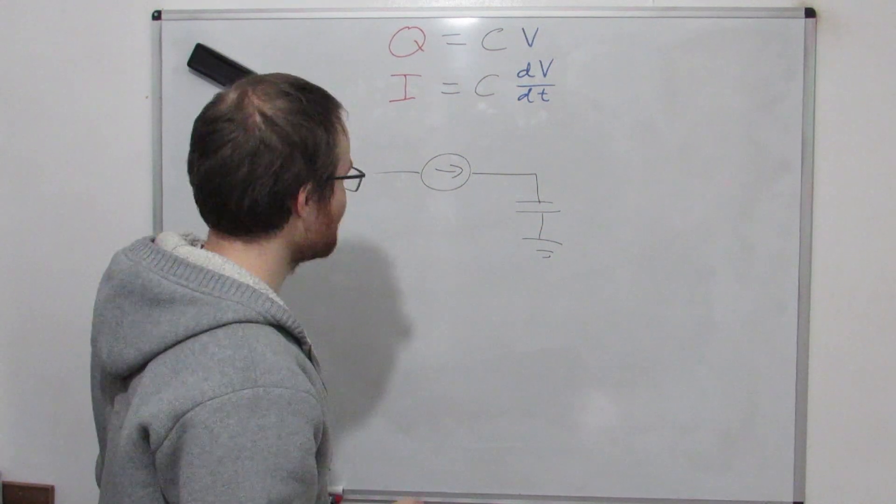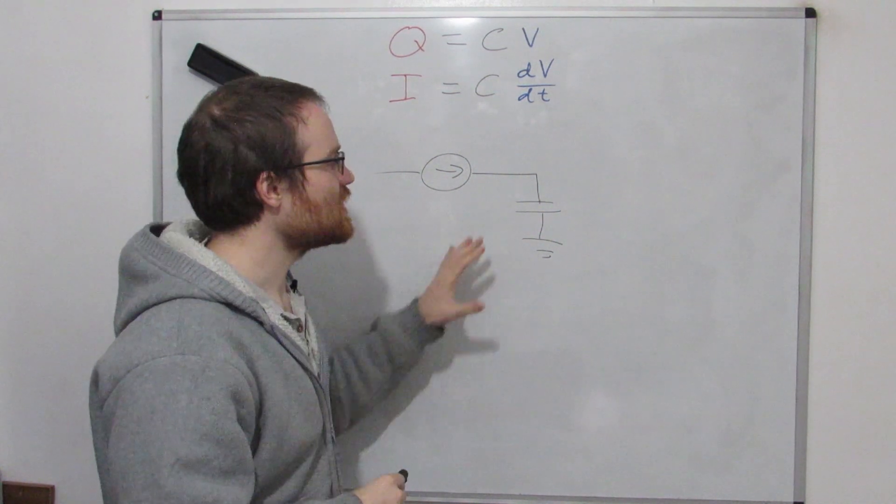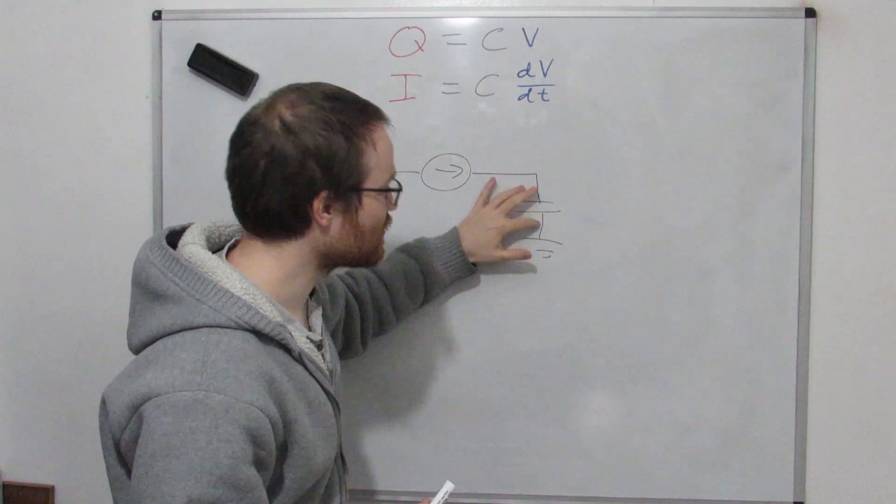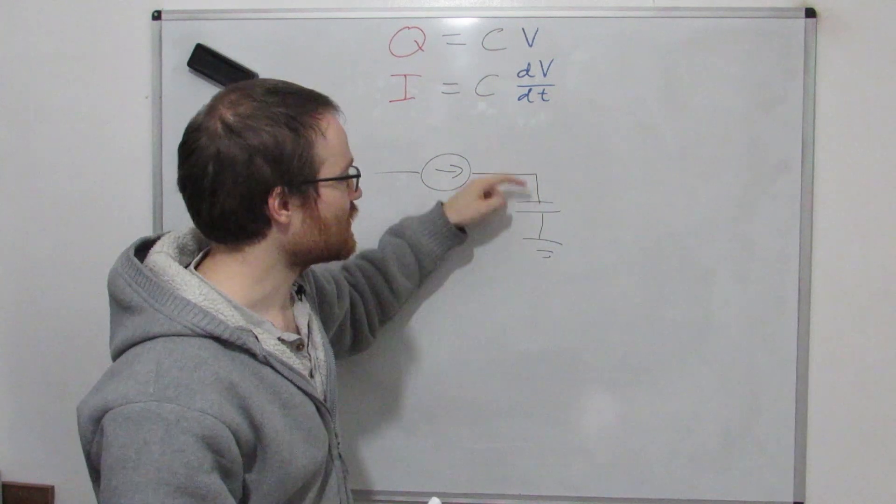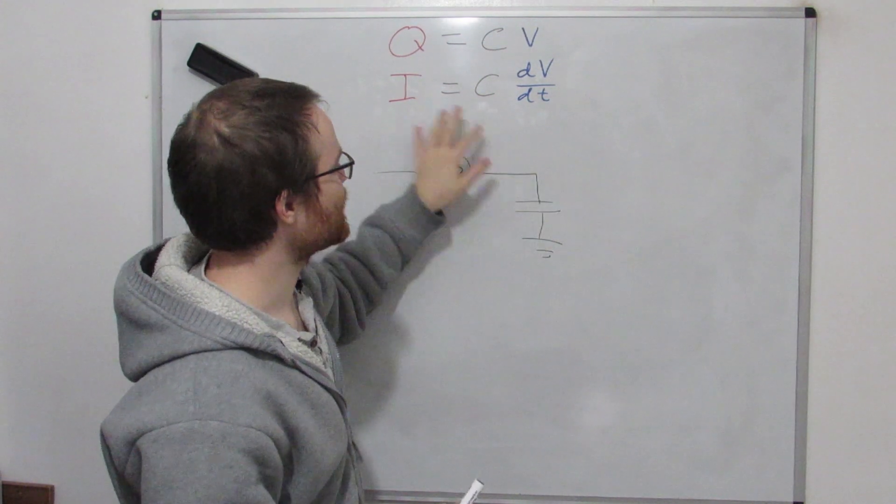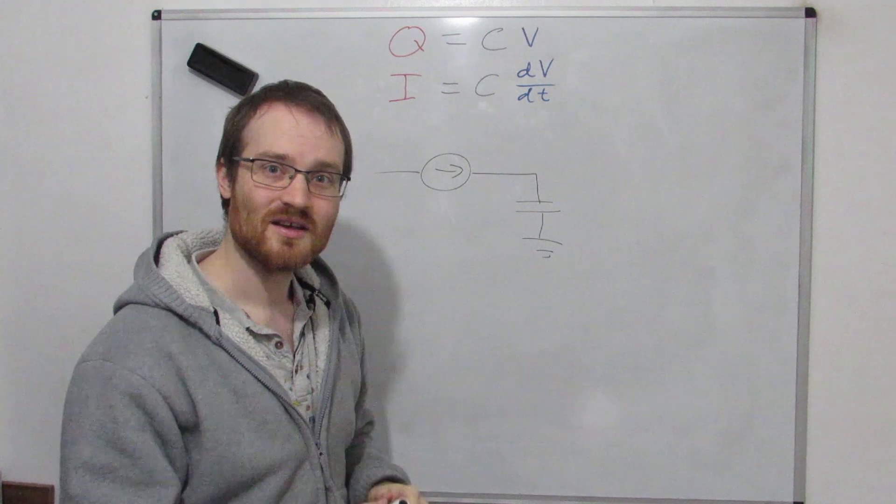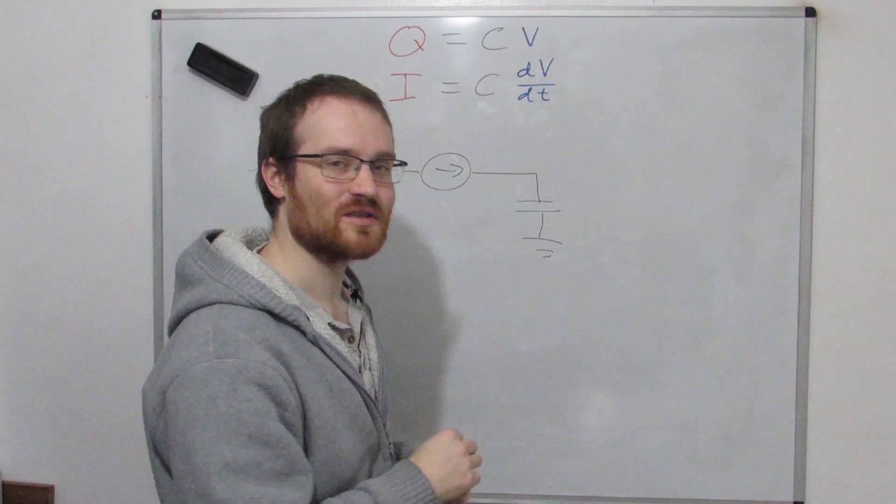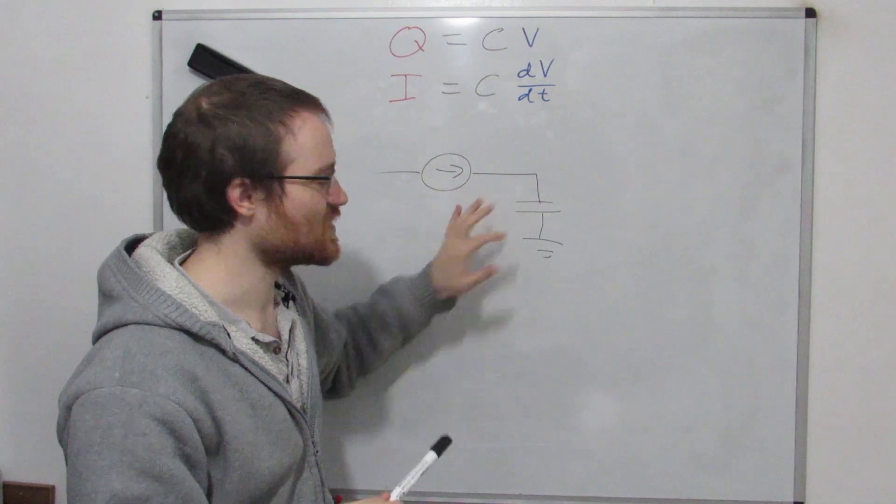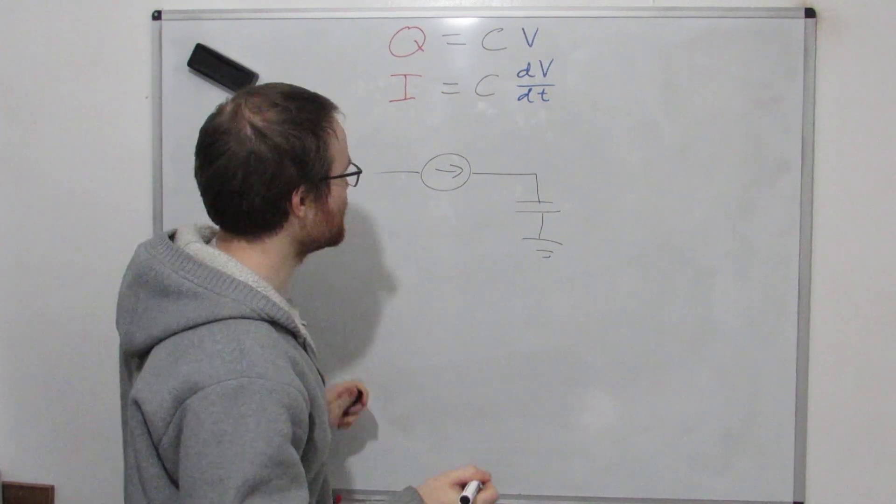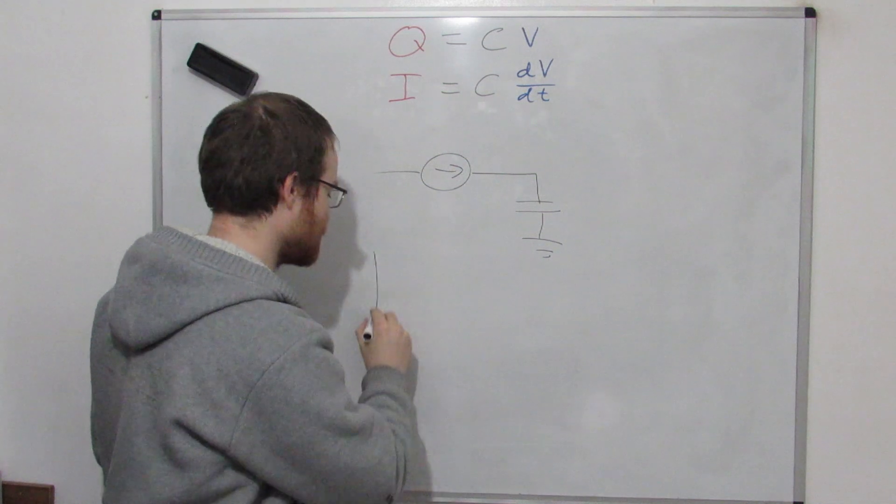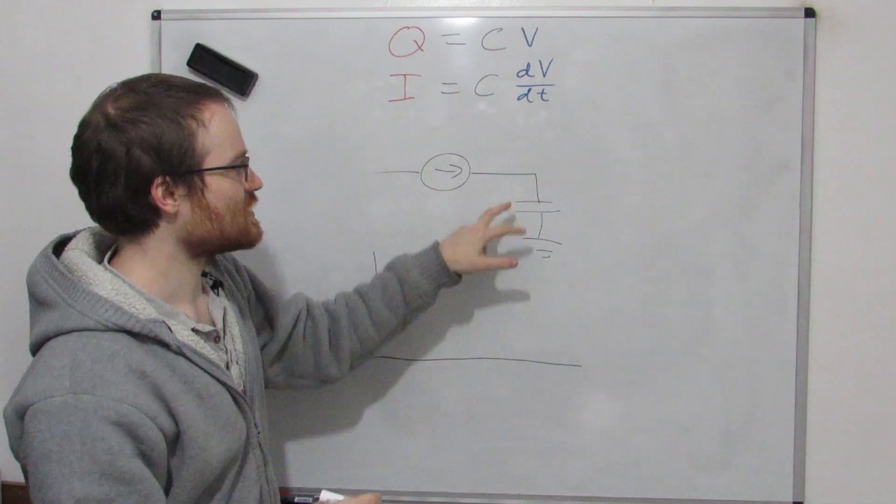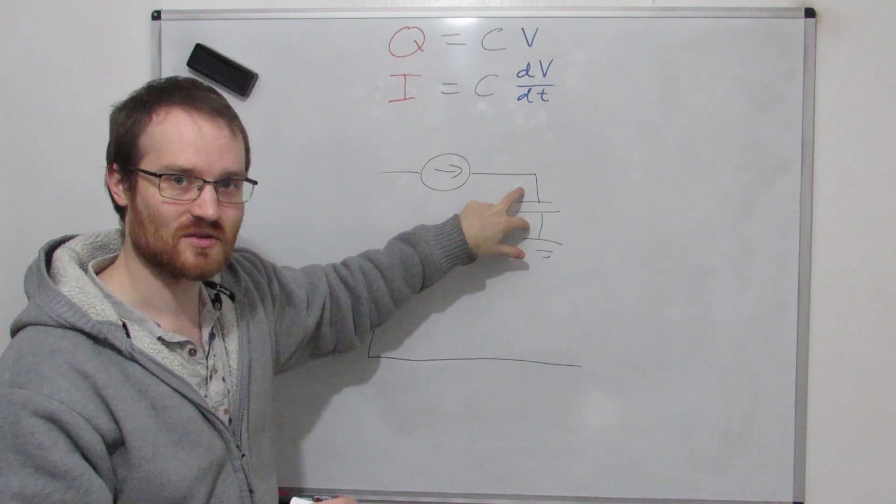Capacitors are one of these things where you're really thinking about, when you're analyzing what a capacitor is doing, you're thinking about the voltage across the capacitor, and the current through the capacitor. You have to look at the capacitor with how it's changing. You can't really look at it like a resistor, where you look at it in one instance of time. But we're more interested in how the voltage across the capacitor is changing.